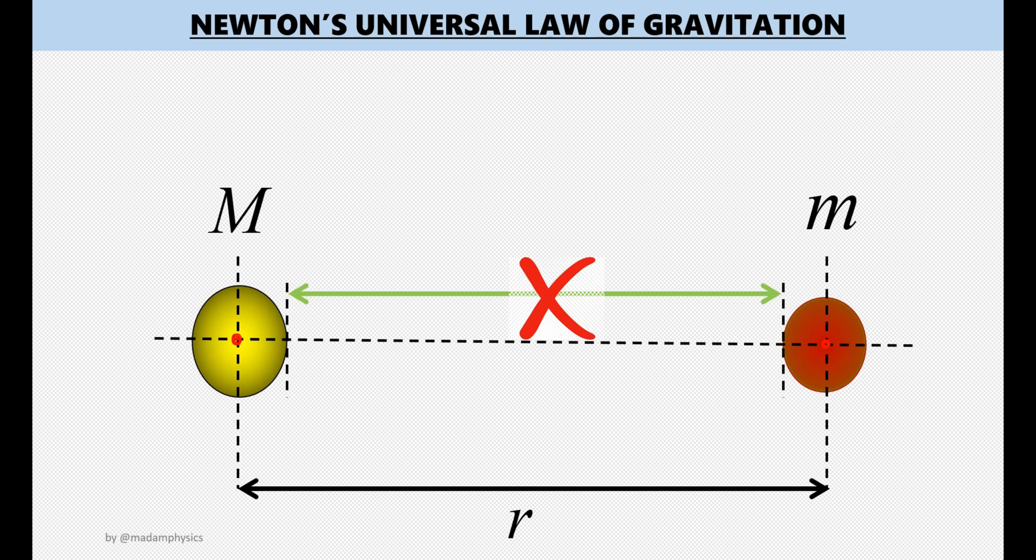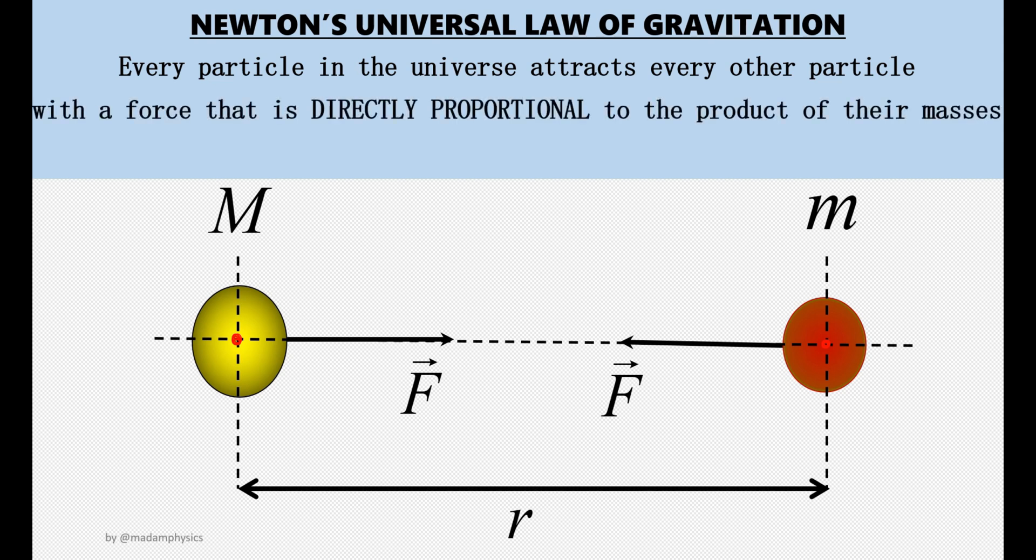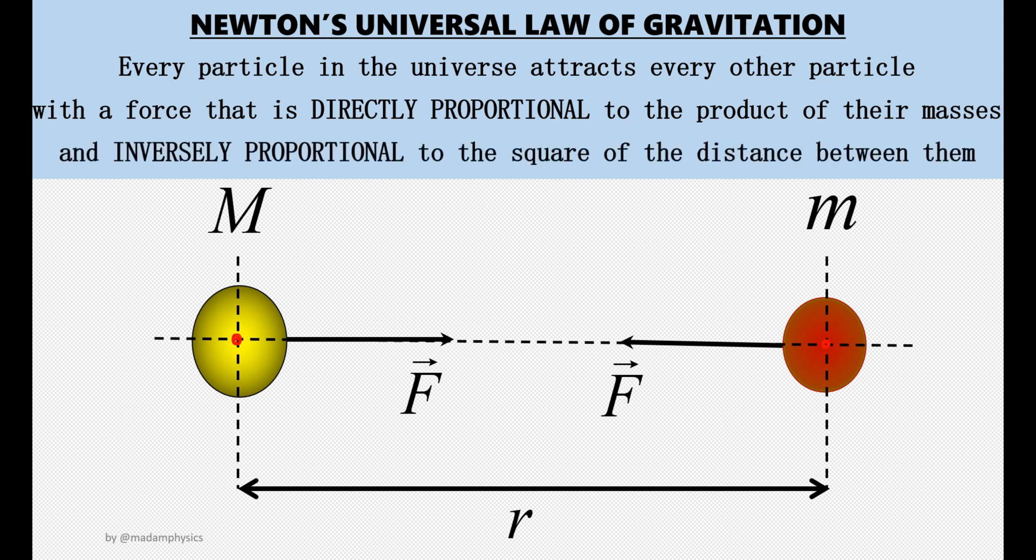Newton's Universal Law of Gravitation states that every particle in the universe will attract every other particle around it. Both objects will exert an equal force to attract one another. This force is directly proportional to the product of their masses and inversely proportional to the square of the distance between them.